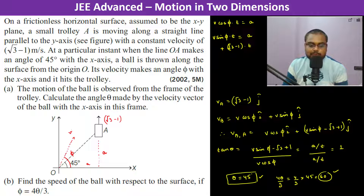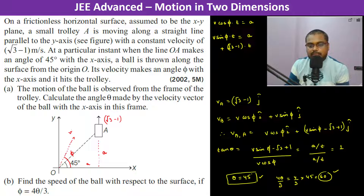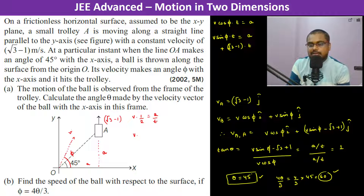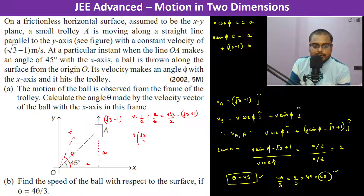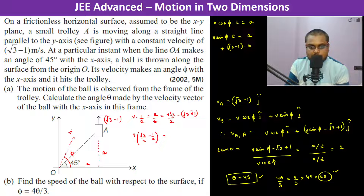To find the speed v of the ball with respect to the surface, we substitute φ = 60°. From v·cosφ = a/t: v·cos60° = v/2 = a/t. From v·sinφ: v·(√3/2) − (√3 − 1) = a/t, giving v·(√3/2 − 1/2) = √3 − 1. Therefore v = 2 m/s. The speed of the ball with respect to the surface is 2 meters per second.